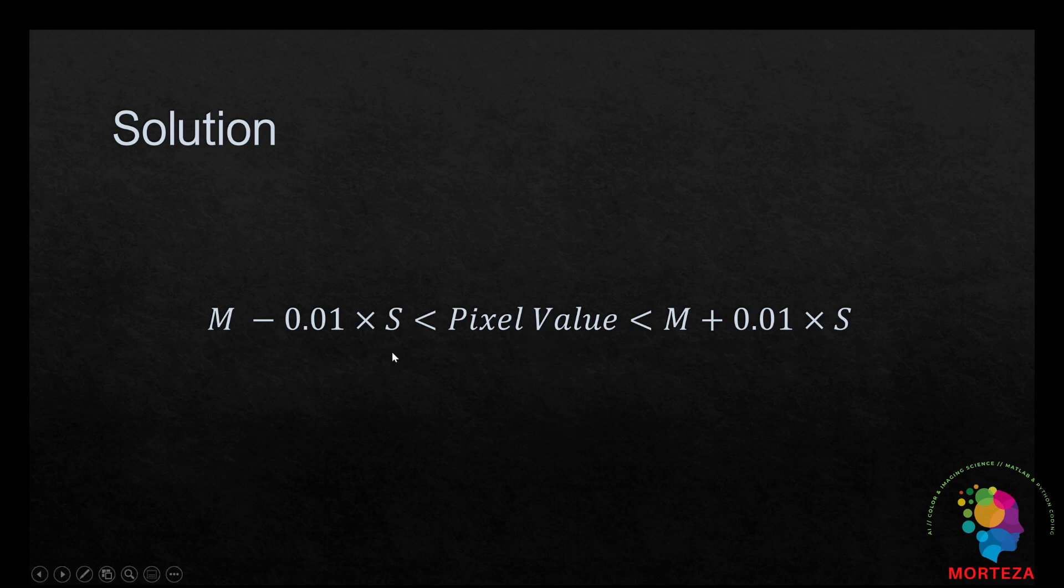Where M stands for the mean and S stands for a standard deviation of each window in the image. And the pixel value shows the pixel value in the second row and the second column of the window.